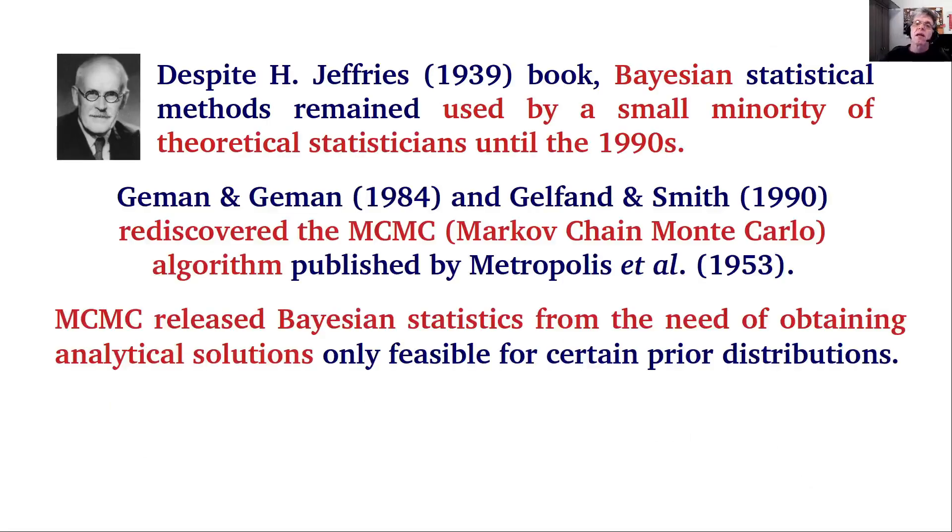In 1939, Harold Jeffreys, a Cambridge geophysicist of great importance, published the first book on Bayesian statistics. This book was reviewed by Fisher and rejected by him in a very harsh book review. Bayesian statistics remained used by a small minority of theoretical statisticians in a few departments in the US and UK until the 1990s.